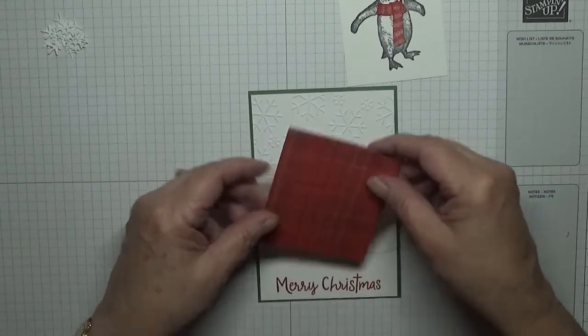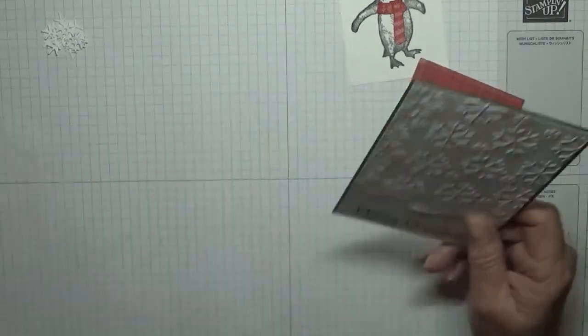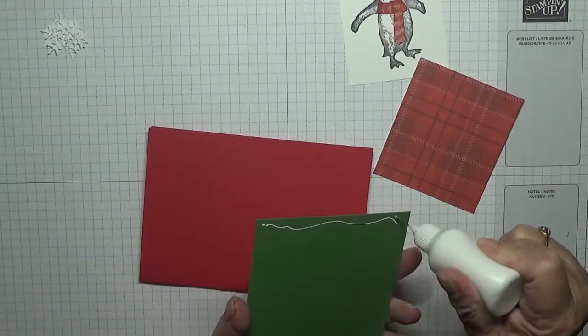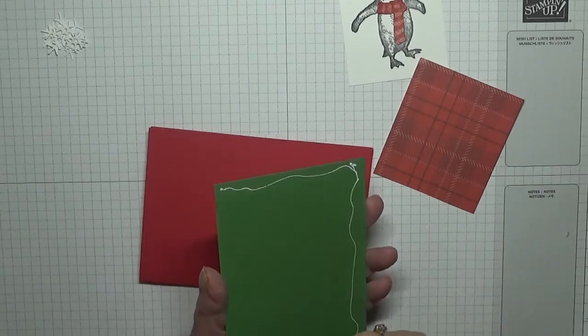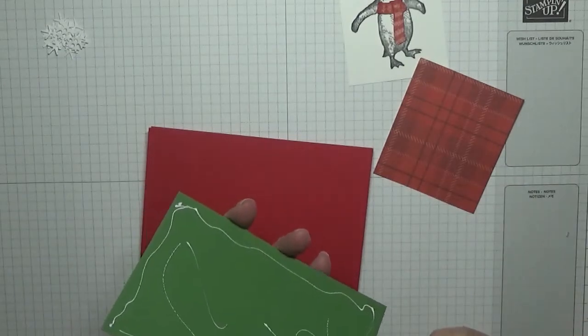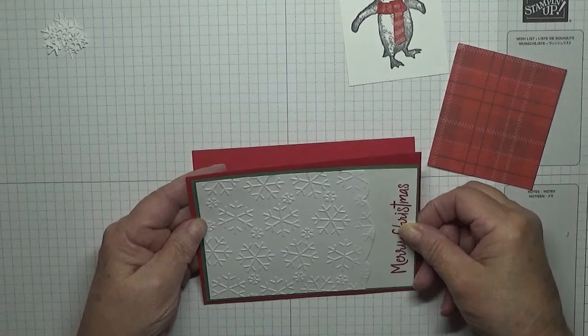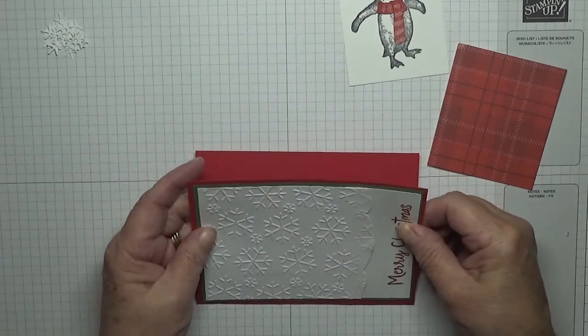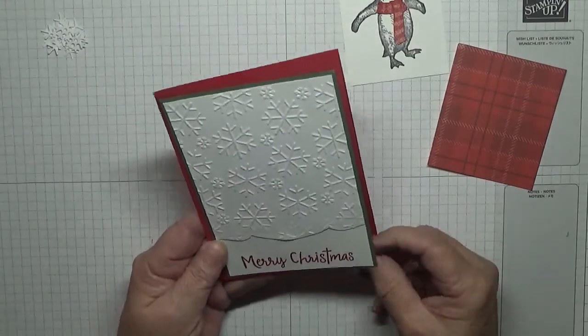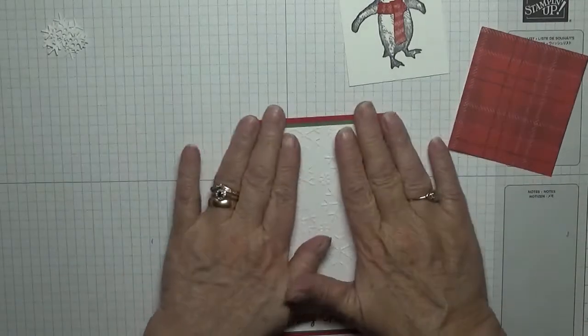Right, now for my red tartan bit. Oh no, let's stick this on our card base before we do anything else. Everything's stuck flat on this card. I haven't used dimensionals at all.